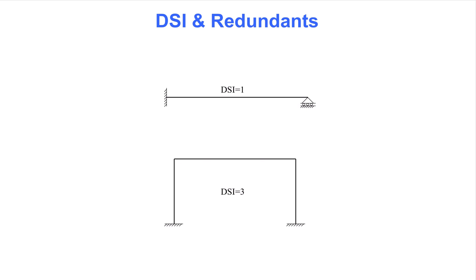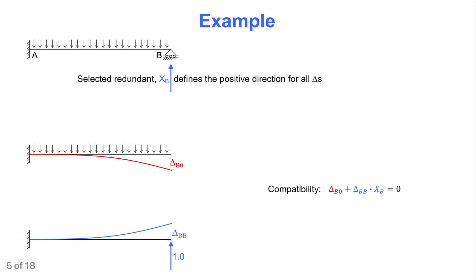This is why the flexibility method is a hand calculation method. We start the analysis of the beam by selecting the reaction force at B as the redundant force, visualized as an arrow shown in blue. The symbol X is used to denote the value of the redundant, with the upwards direction arbitrarily selected as positive. The flexibility method now proceeds by removing the capacity of the structure or support to carry the force selected as the redundant.